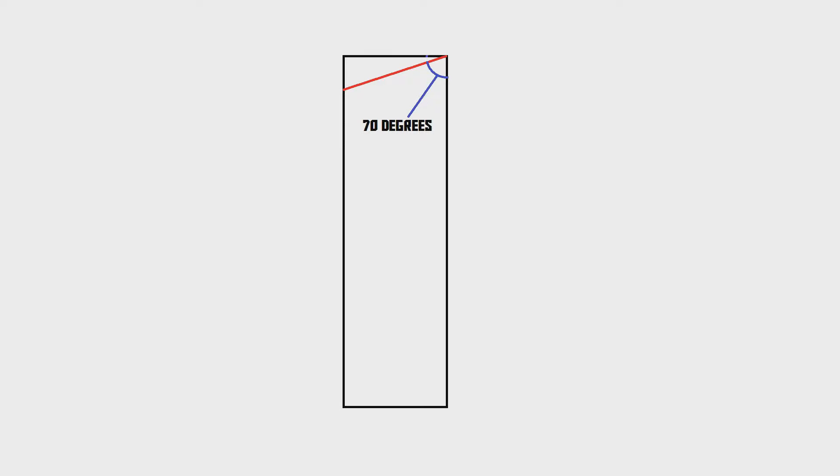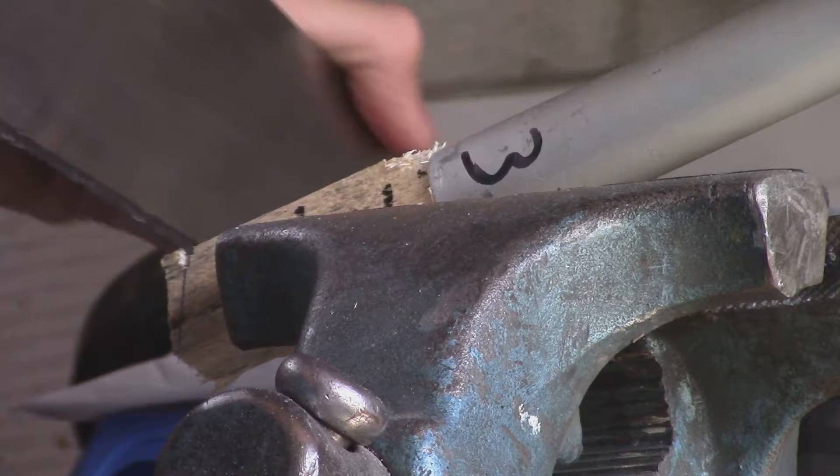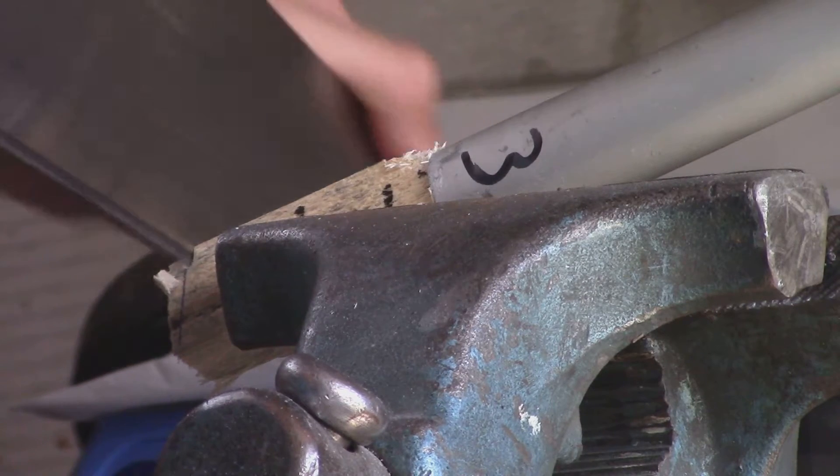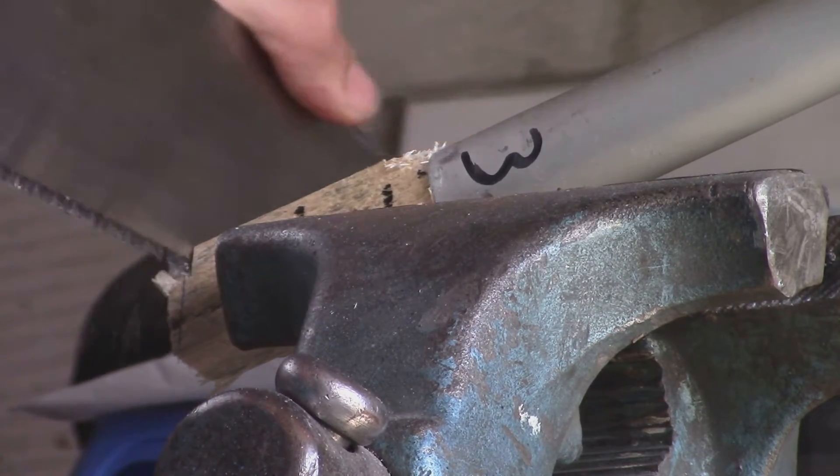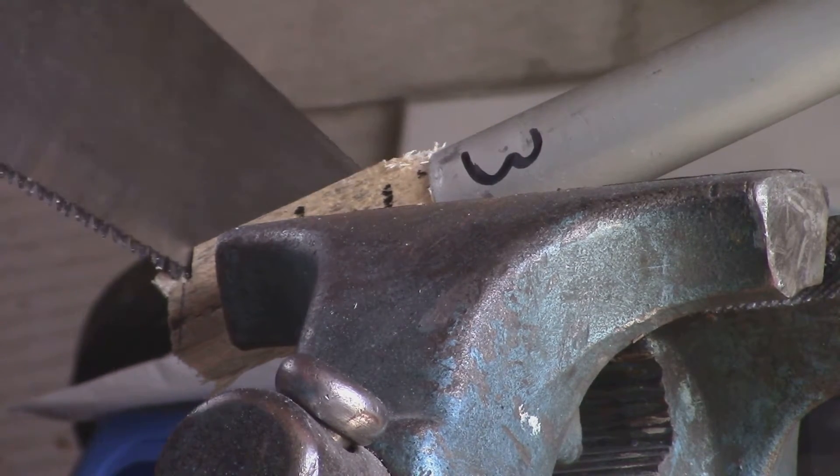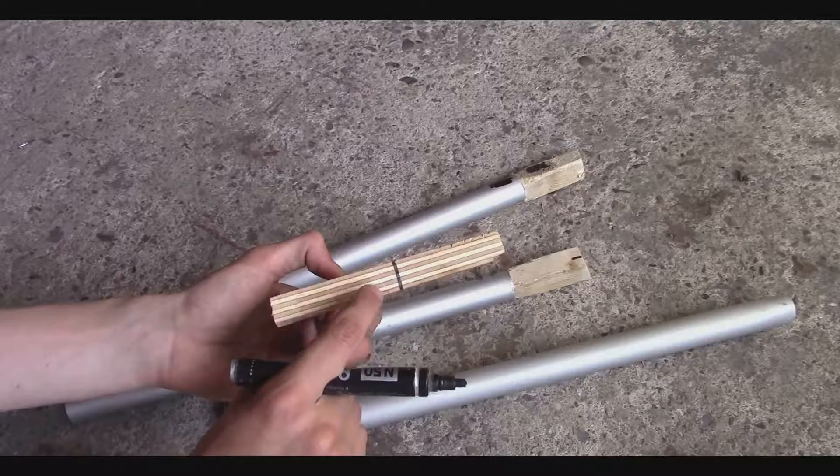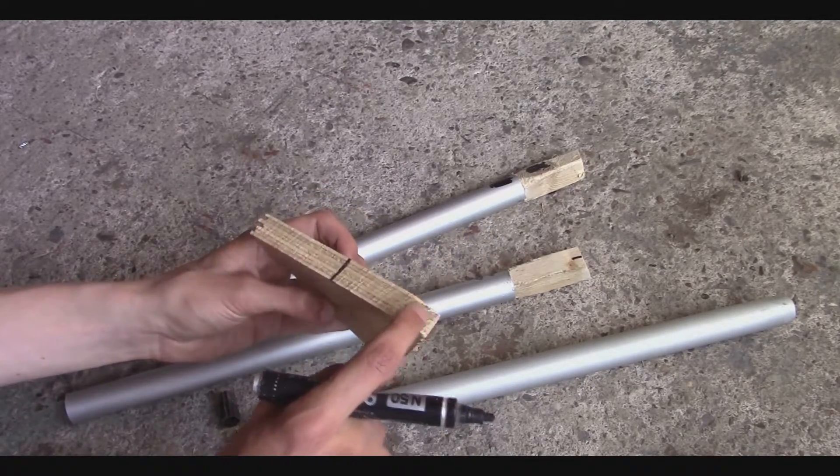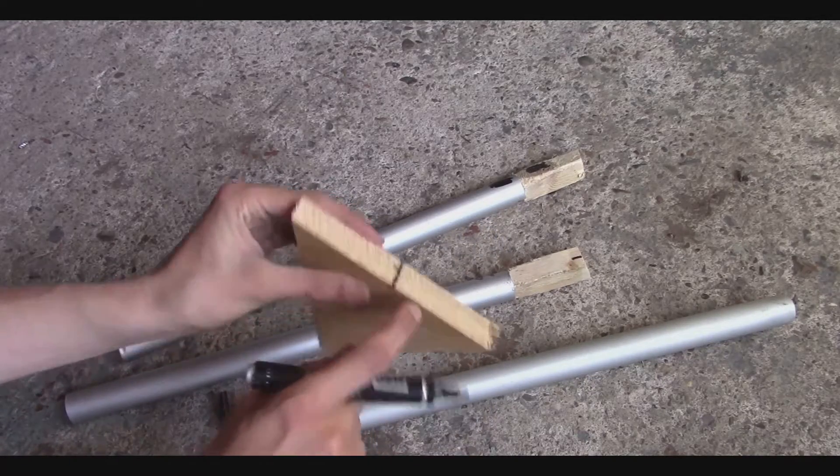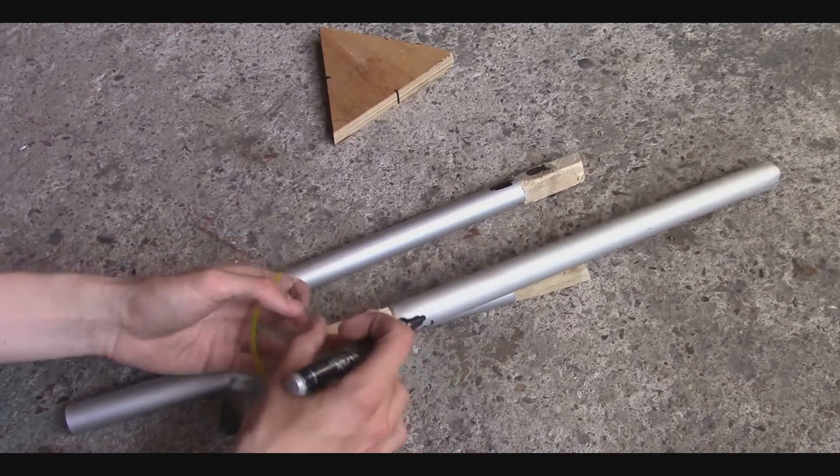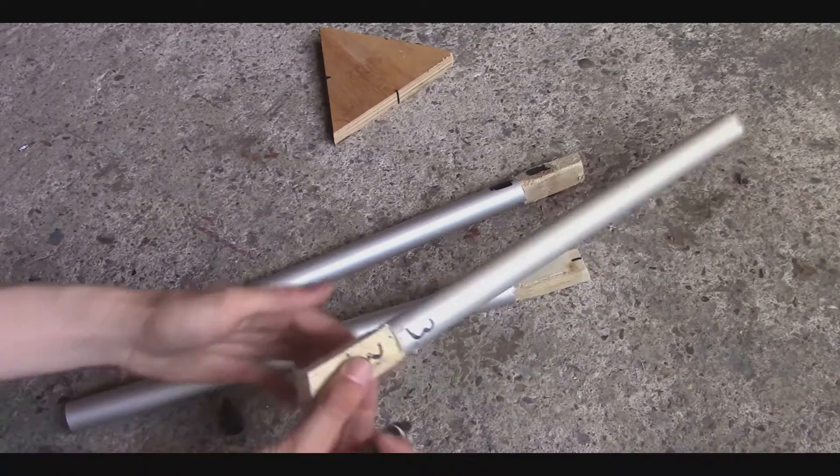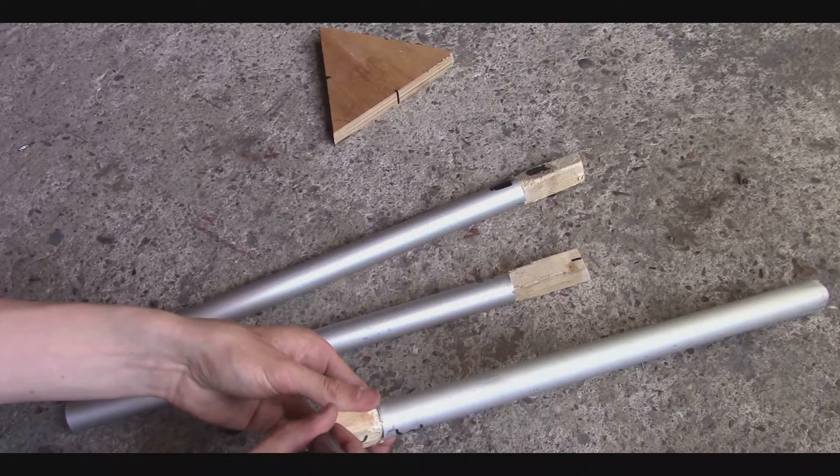Next, I slice the top of each piece of wood as shown in this image. Now we need to put marks on the middle of each side of the triangle and on the wooden parts connected to the pipes as well.